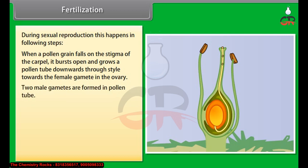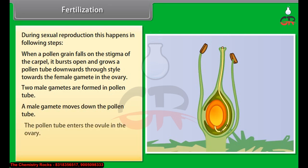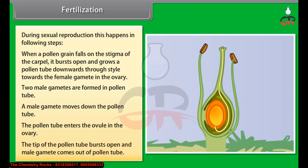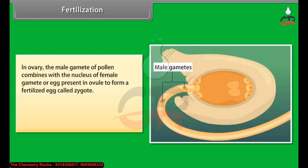Two male gametes are formed in the pollen tube. A male gamete moves down the pollen tube, and the pollen tube enters the ovule in the ovary. The tip of the pollen tube bursts open and the male gamete comes out. In the ovary, the male gamete combines with the nucleus of the female gamete or egg present in the ovule to form a fertilized egg called the zygote.